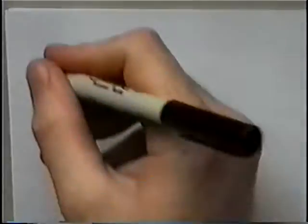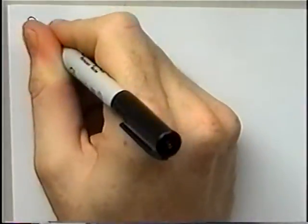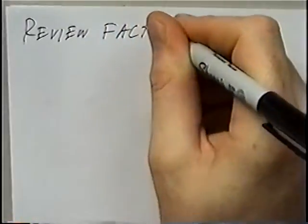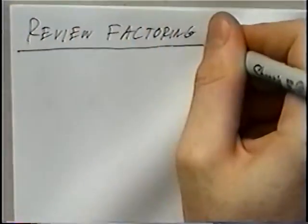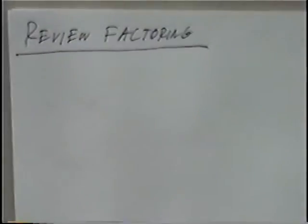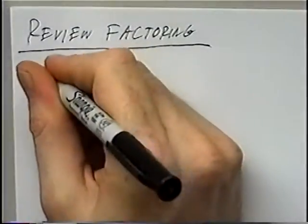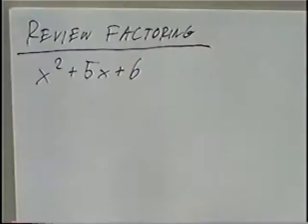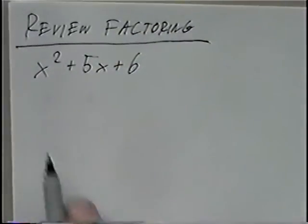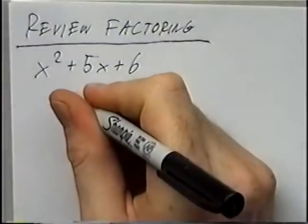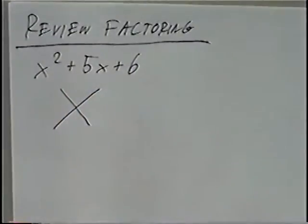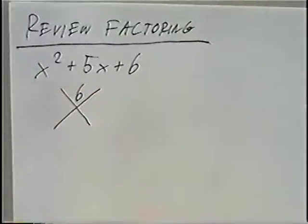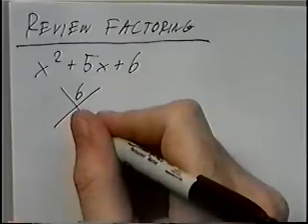The title of the next section is 'Review Factoring,' and in this section we'll factor polynomials. The first question is x squared plus 5x plus 6. There are a few ways to factor this. One method is called the diamond method, where you draw an X. For the X, the top number will be the last number, 6, and the bottom number will be the middle number, which is 5.